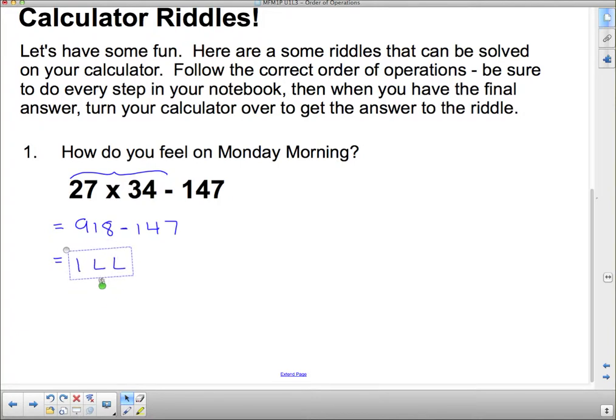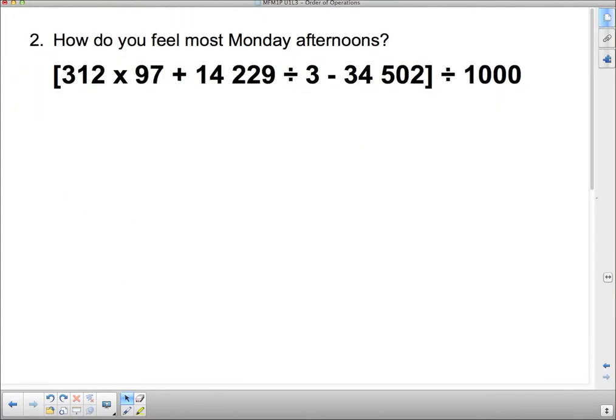Okay, so sometimes you can't just see it on your paper. You have to actually look at it on your calculator. But that looks like it says ill. Okay, next question. Oh, this is a biggie. And there are some brackets. It says, how do you feel most Monday afternoons? Well, let's have a look. What do we do first here? Well, we have to do brackets, so we do everything. We've got to get a final answer inside this bracket before we divide by 1,000. So, we're going to take a look at this bracket. When we go inside the bracket, we have to follow order of operations. And since there's no other brackets and there's no exponents, we're looking at multiplication. So, here's some multiplication. And here's some division.